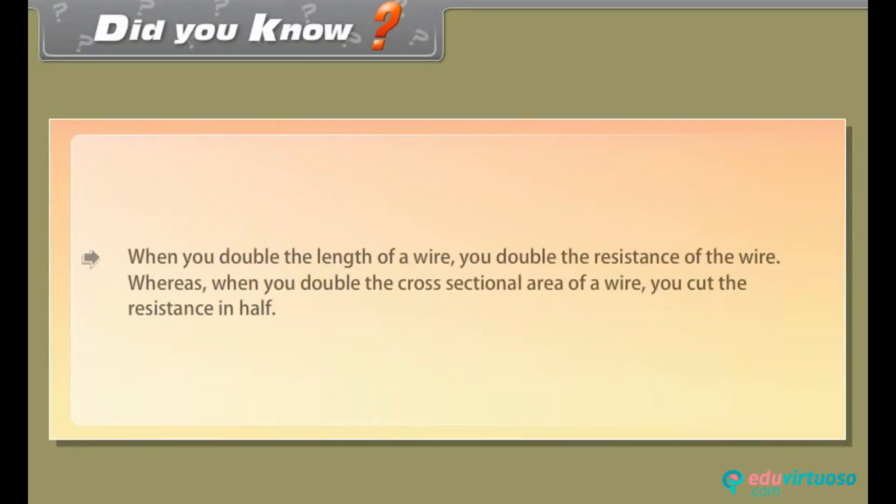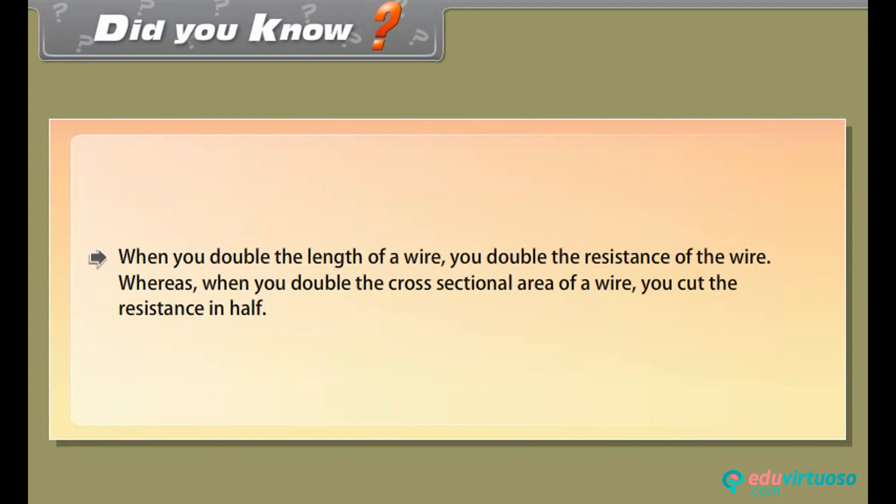Did you know? When you double the length of a wire, you double the resistance of the wire. Whereas, when you double the cross-sectional area of a wire, you cut the resistance in half.